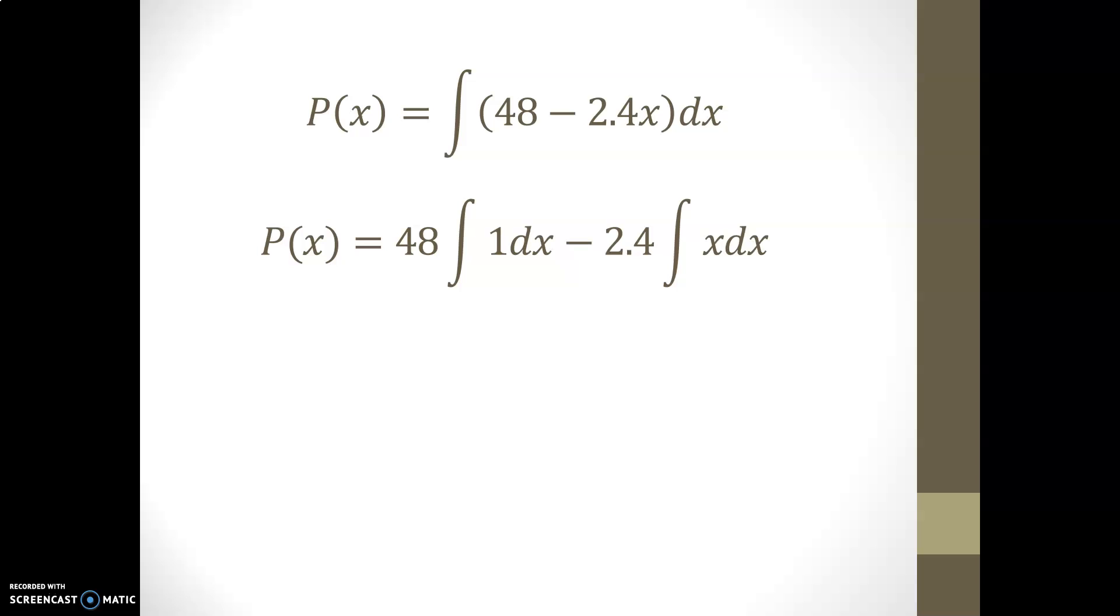Now recall that the integral of 1dx is a basic antiderivative that is equal to x, and that the integral or the antiderivative of x is x squared over 2, which is a power rule, also part of our basic list. And therefore, 48x minus 1.2x squared is an antiderivative of the original function 48 minus 2.4x.